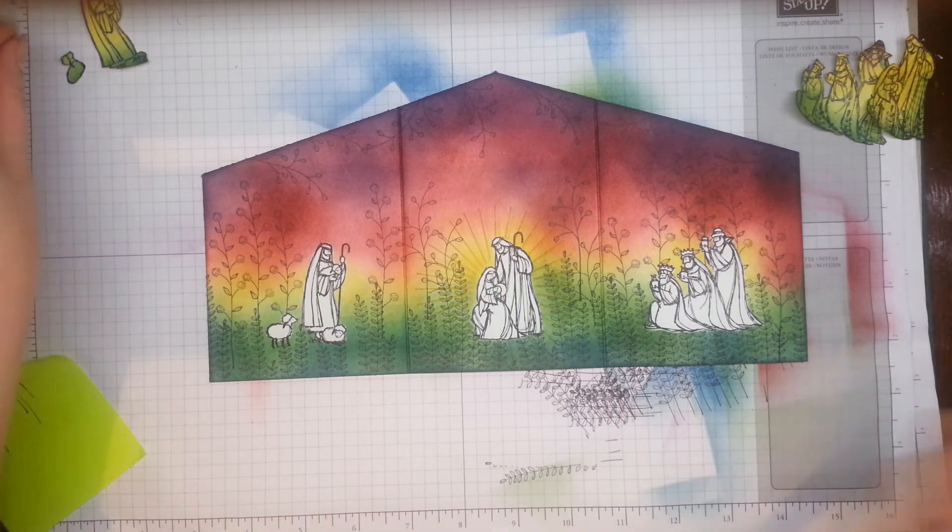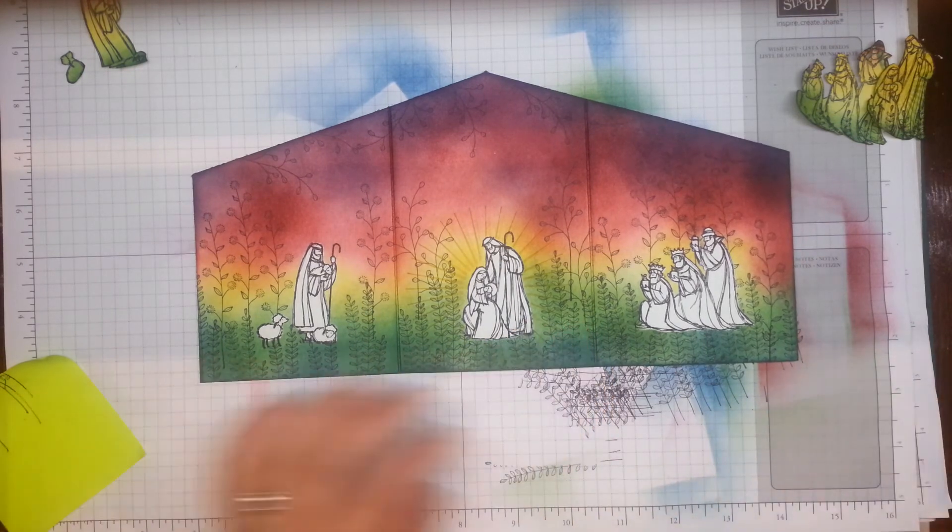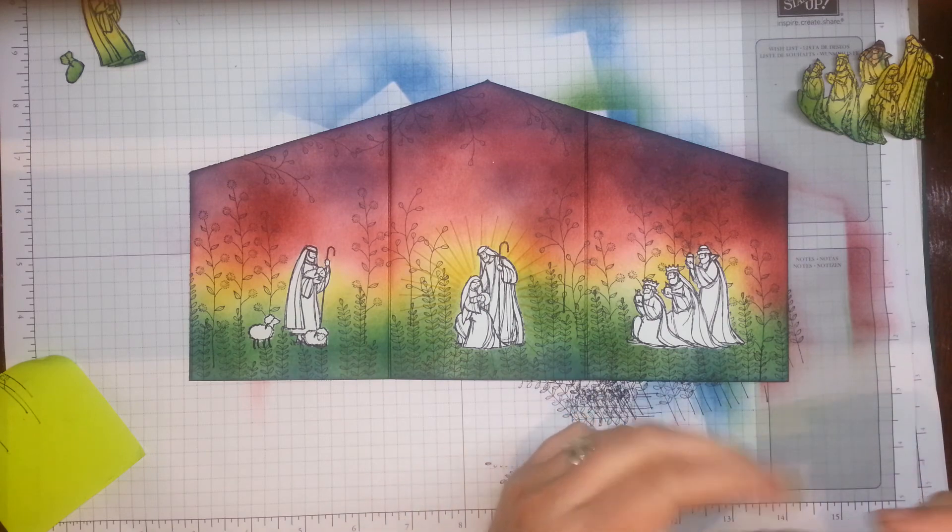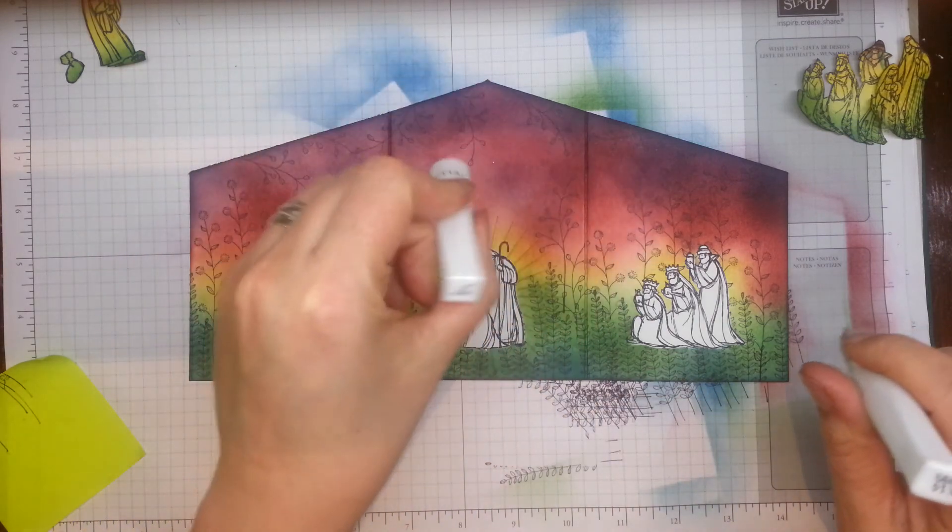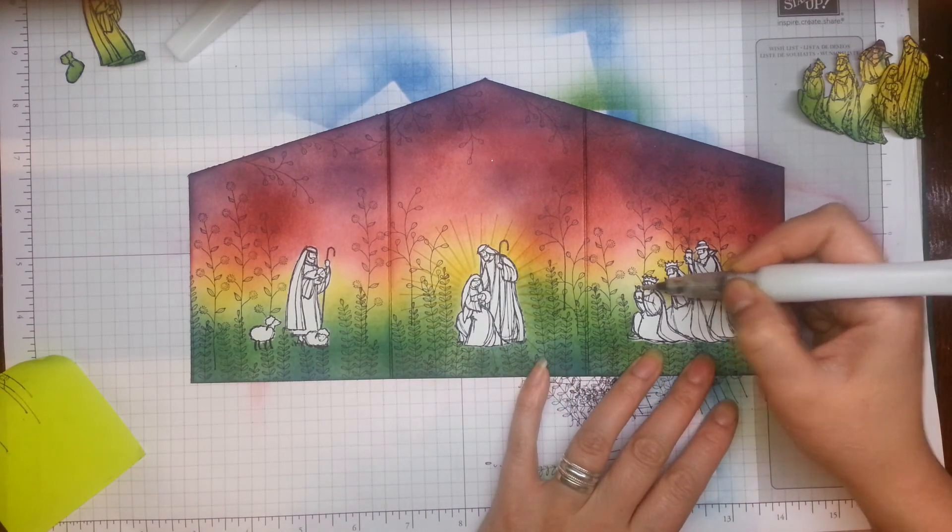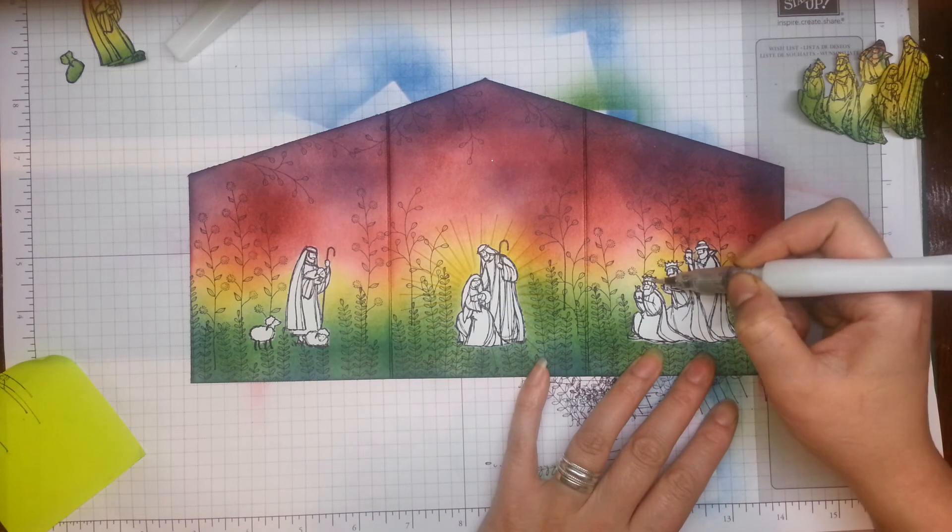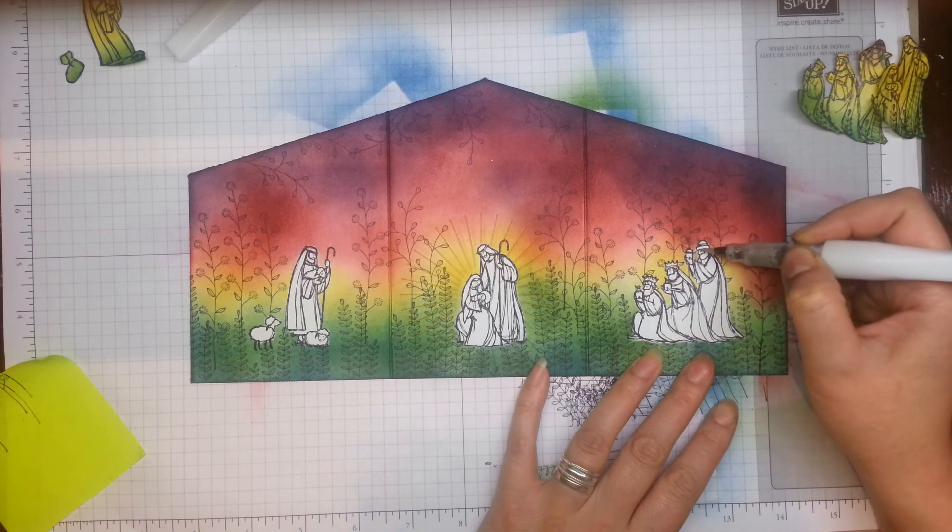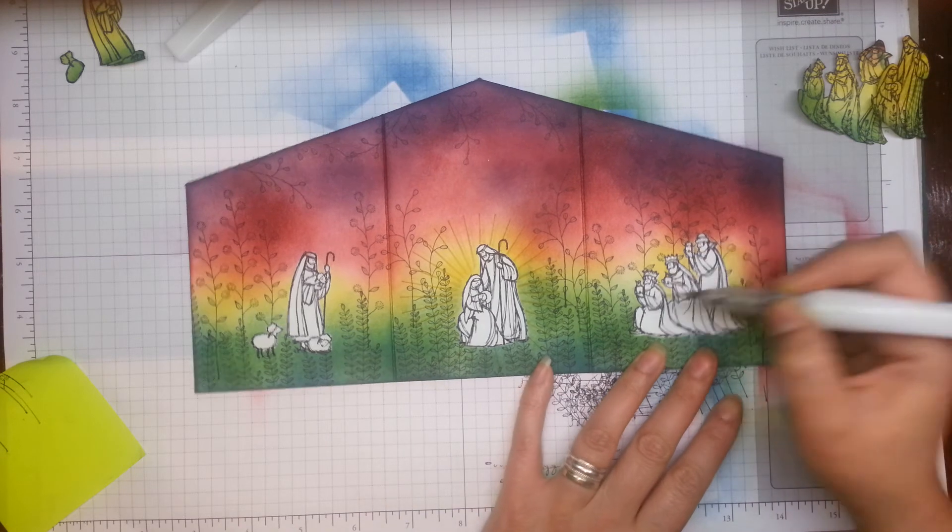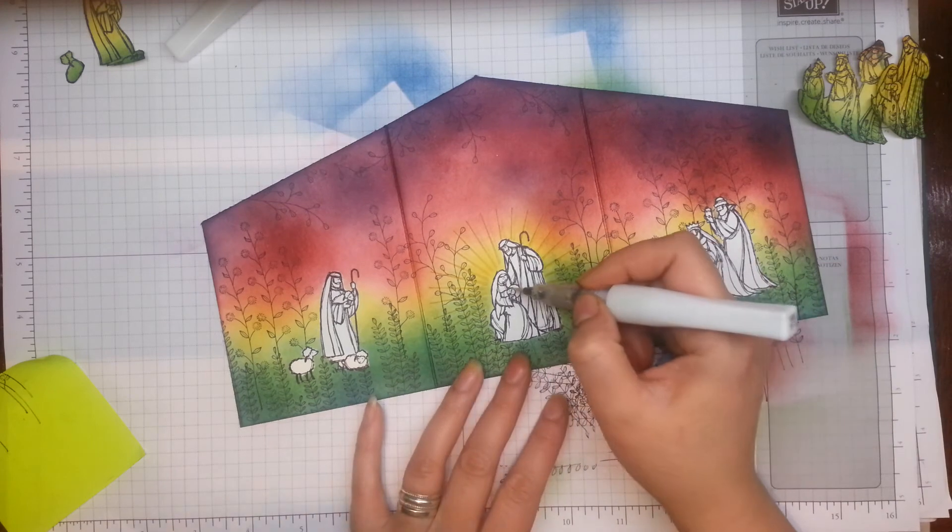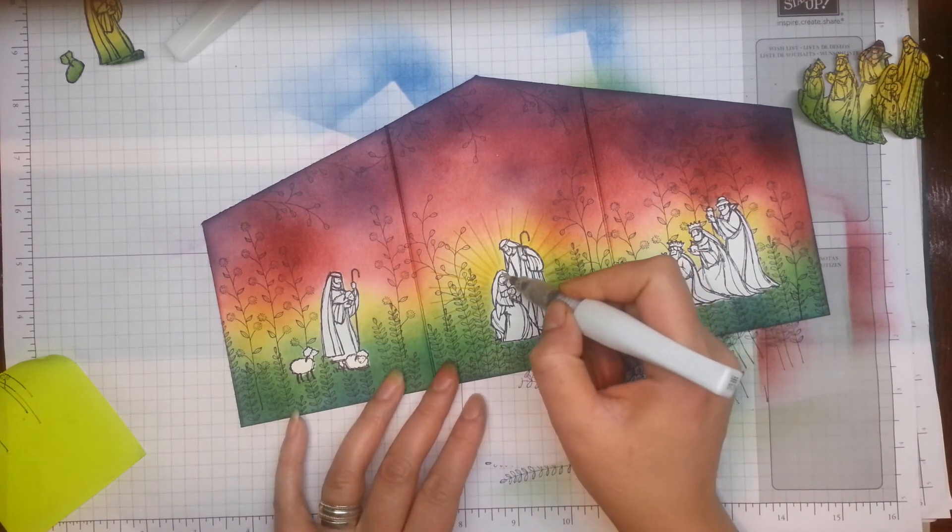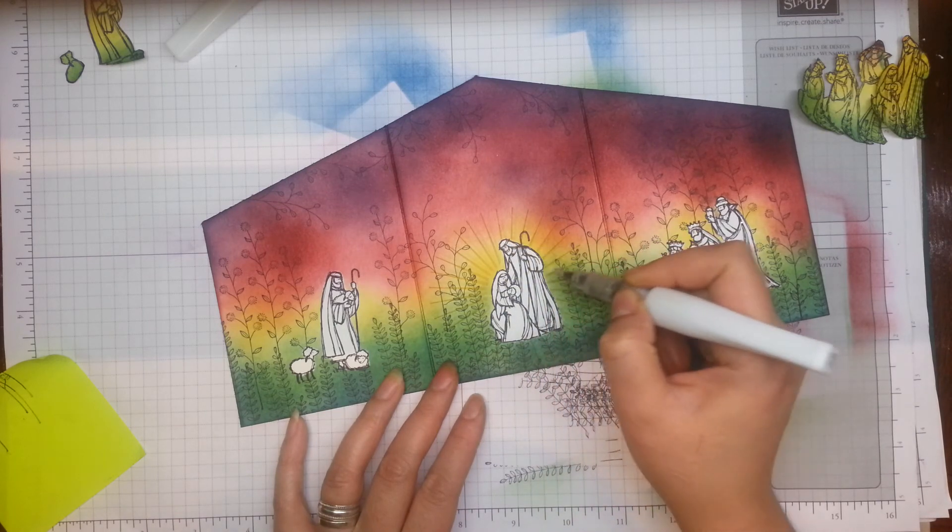However, I'm going to be using a little bit of this Wink of Stella, which again is going to be available from January in the new catalogue. And this is the silver option. And I'm just going to add some glitter elements to the crowns of the Magi. And they're gifts to Jesus. And then maybe around baby Jesus. Maybe just with the tops of the clothes.